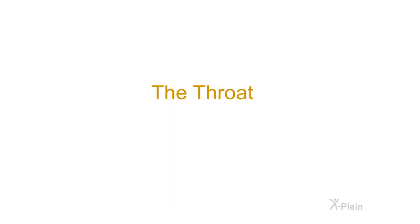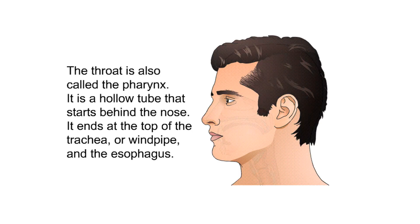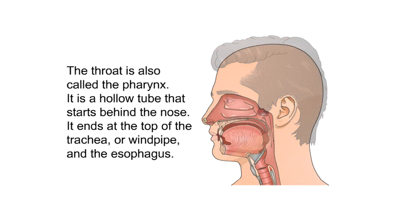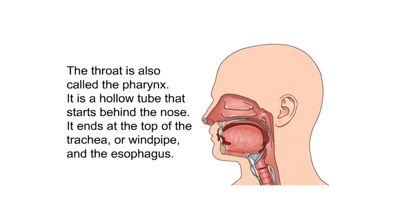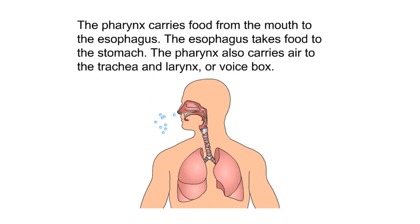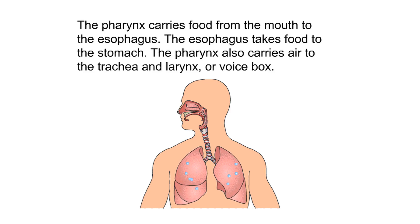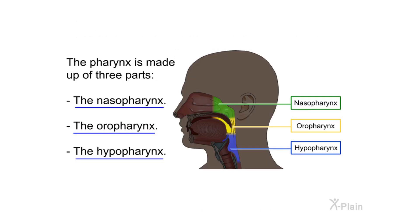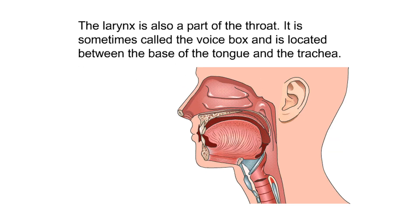The throat is also called the pharynx. It is a hollow tube that starts behind the nose and ends at the top of the trachea, or windpipe, and the esophagus. The pharynx carries food from the mouth to the esophagus, which takes food to the stomach. The pharynx also carries air to the trachea and larynx, or voice box. The pharynx is made up of three parts: the nasopharynx, the oropharynx, and the hypopharynx.